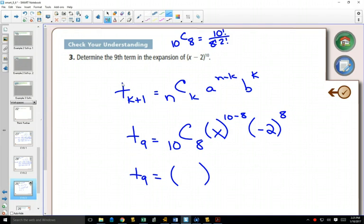If you were expanding it, the 8 factorials would cancel out, right? And you'd have 10 times 9 on the top still divided by 2, which would be 45.